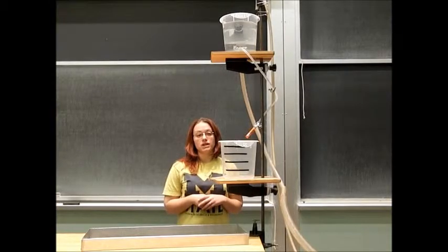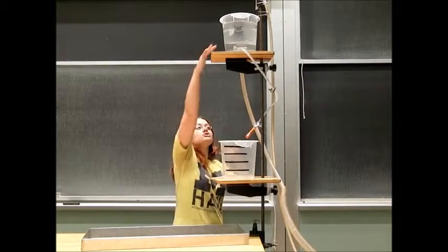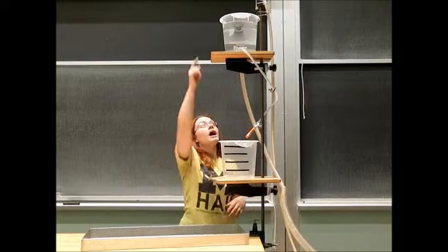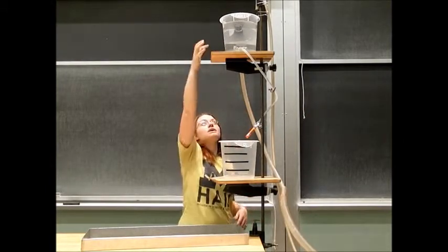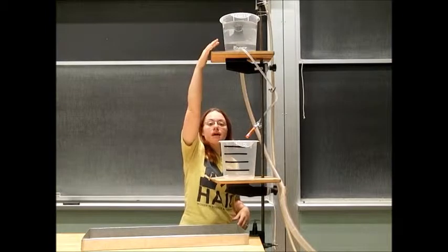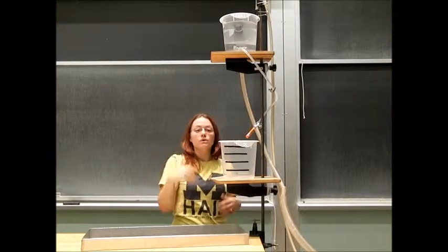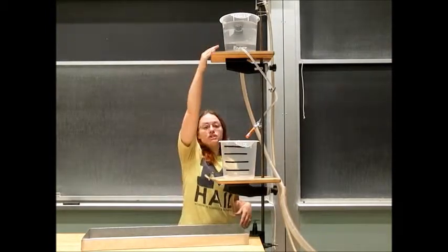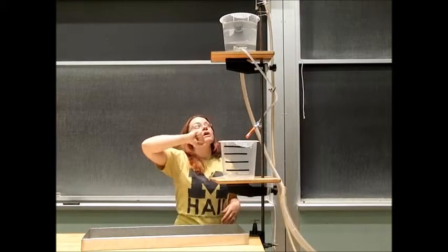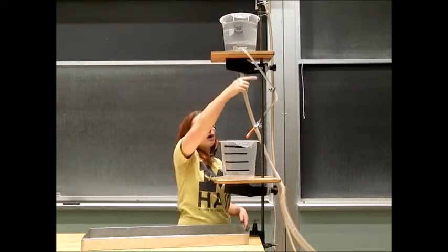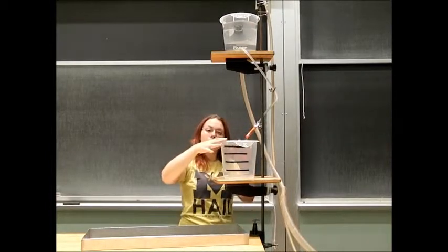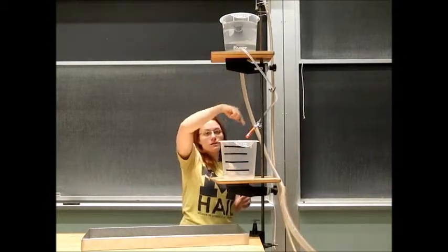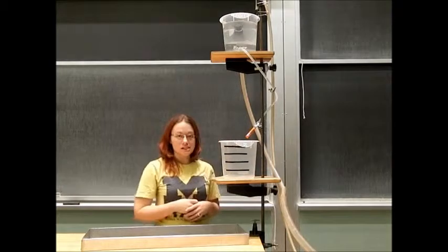This is our leaky bucket demonstration. It consists of two buckets, a fill hose at the top, and a drain hose in order to keep the level of the water in this top bucket at a given value, which will represent the voltage of our power supply. We then have a hose that will leak some water into this bottom bucket, which will represent our current flow into our system.